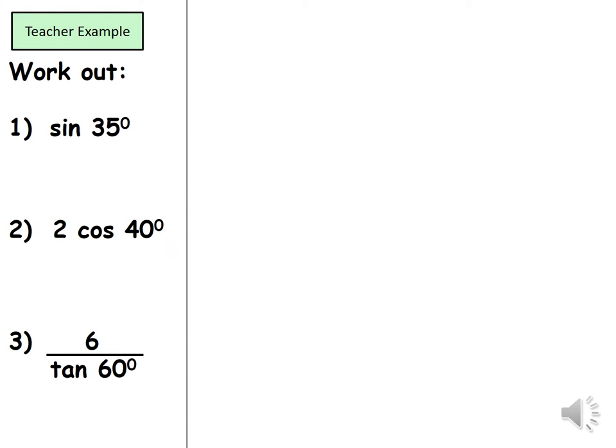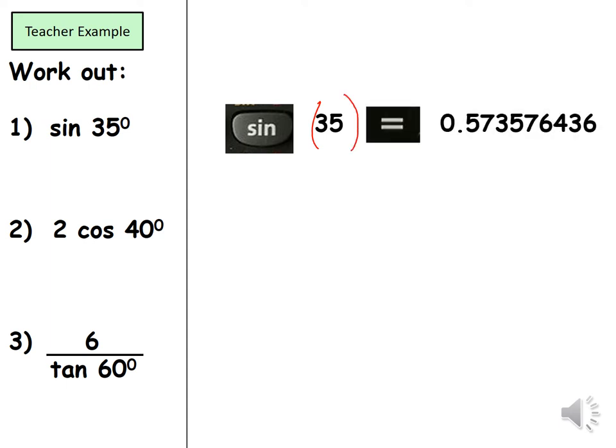All right guys this is how we're going to use sine, cos and tan using a calculator. What you're going to do is input the button sine from the calculator then you're going to receive an open bracket. You're going to put your angle in there so 35, make sure you close the bracket then you're going to press equals and you're done. That should get your answer.